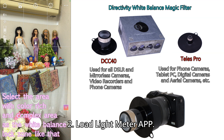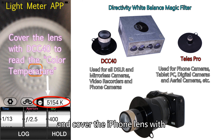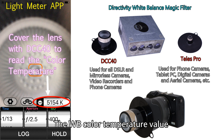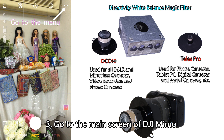Step 2: Load the Light Meter app, turn the lens towards the white balance lock zone, and cover the iPhone lens with the white balance magic filter DCC-40 or Telos Pro. The white balance color temperature value will appear immediately. For example, this reads 5154K on screen. Please write down this value.